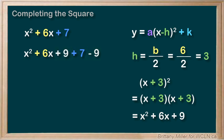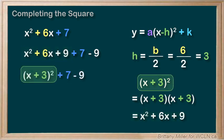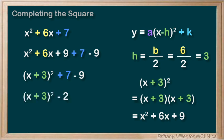So we can add a 9 here as long as we take 9 away later on. Here's where the magic happens. This part of the expression factors into x plus 3 squared and then 7 minus 9 is equal to negative 2. And that's it. It's in vertex form.